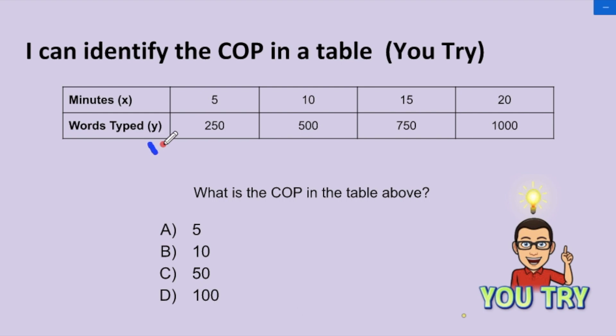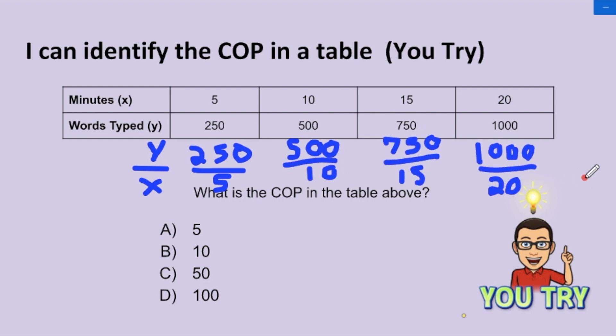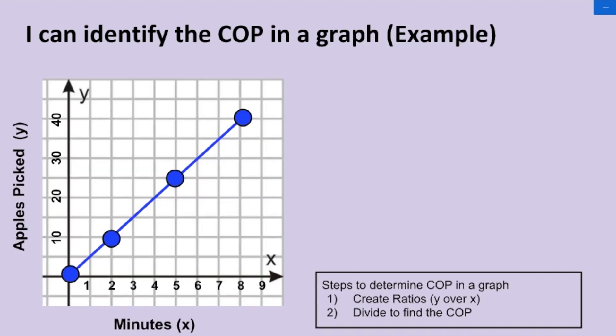So remember, we have to do the y divided by the x. So the next step is to divide, and I'll save us some time. When I divide these, all of them are going to be equal to 50. So our COP for this table would be 50. Our next learning target is I can identify the COP in a graph.